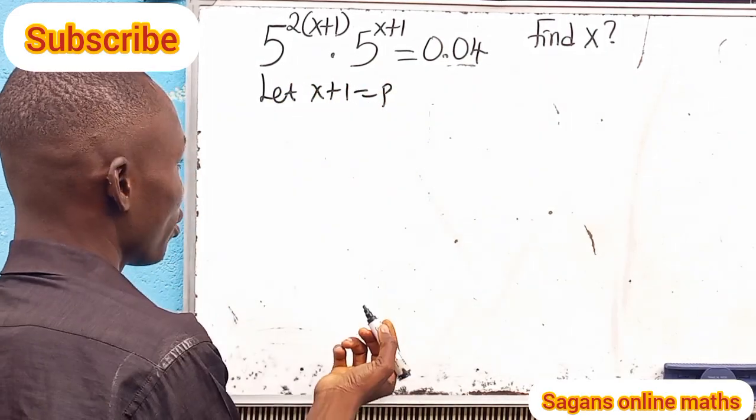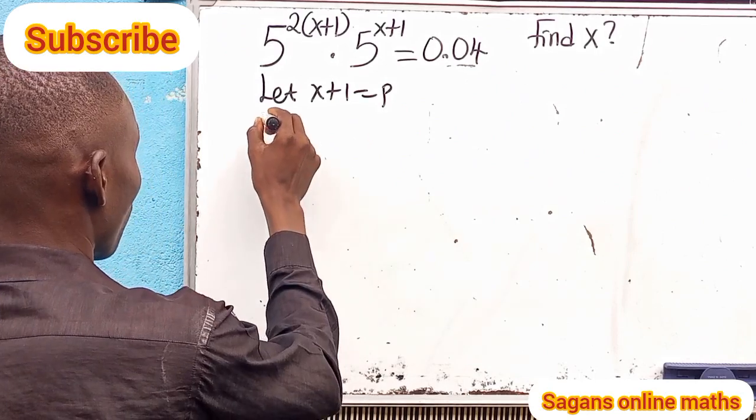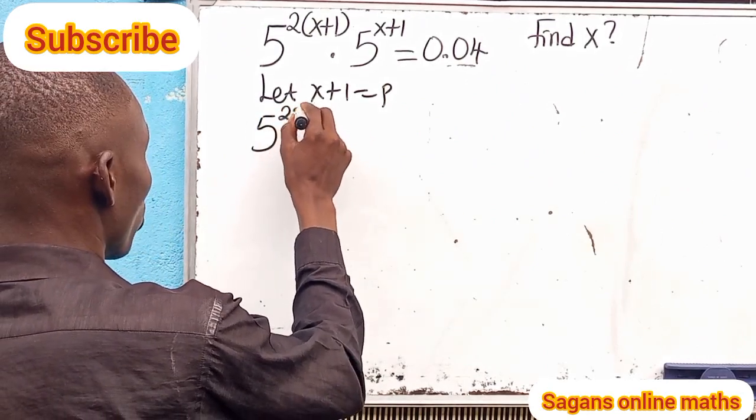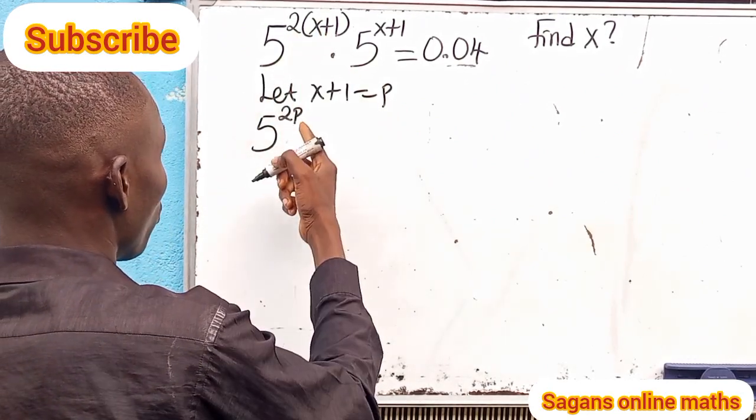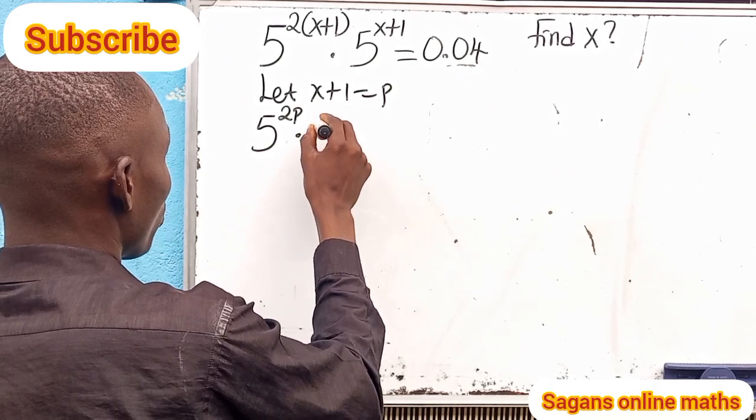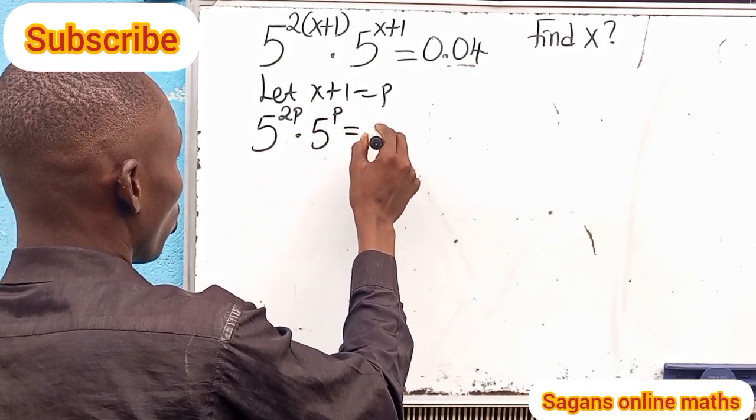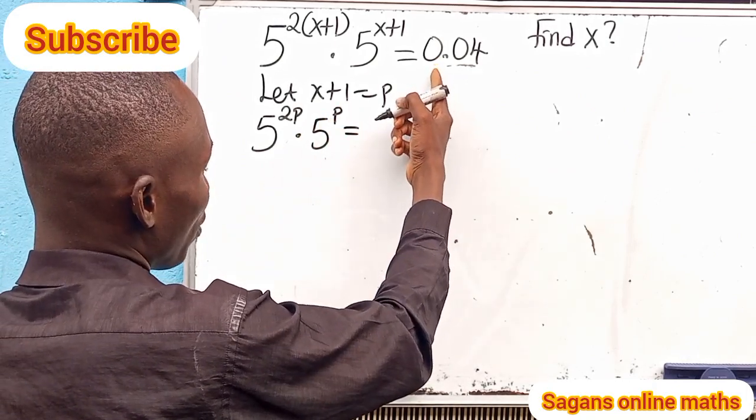So that can be very easy for us to solve. Now this becomes 5 raised to -2p, because 2 multiplied by p equals 2p, then multiplied by 5 raised to -p.